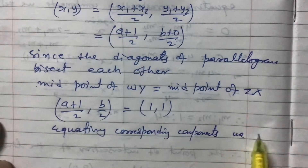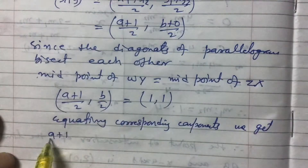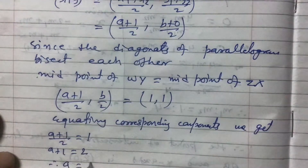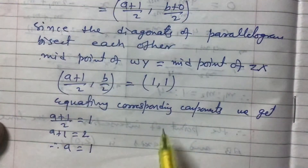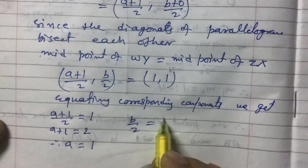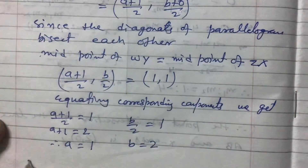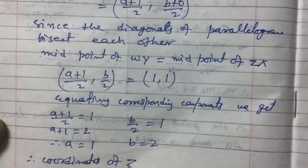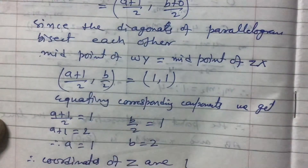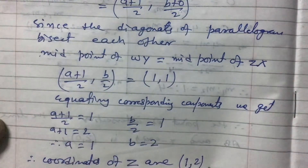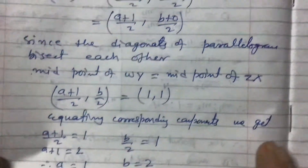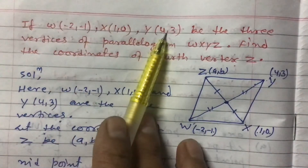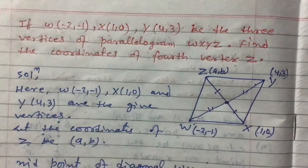Equating the components: (a + 1)/2 = 1, so a + 1 = 2, therefore a = 1. Similarly, b/2 = 1, so b = 2. Therefore the coordinates of Z, which we supposed as (a, b), are (1, 2). In this way we can find the fourth vertex of a parallelogram when three vertices W, X, Y are given. Thank you for watching this video.